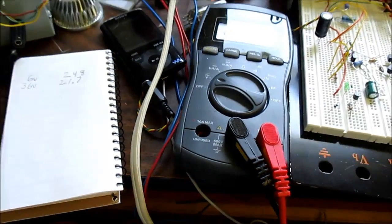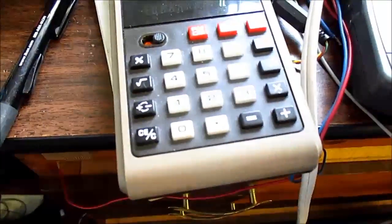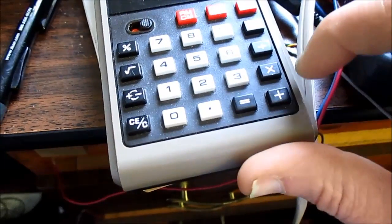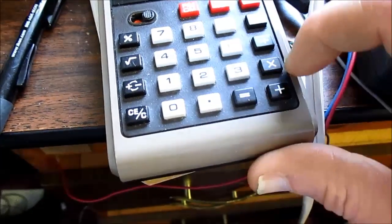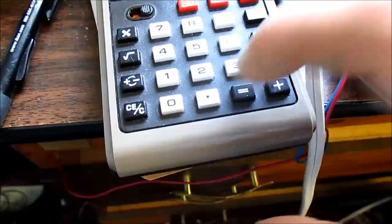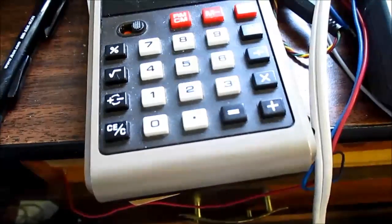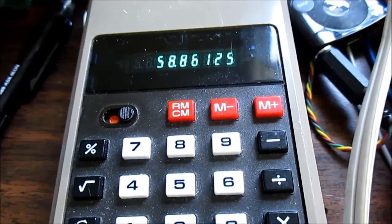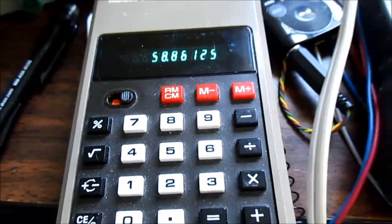So let's see what kind of power we are getting from that. So we have 21.7 volts RMS, square that, divided by 8 ohms, 58.86 watts. Getting pretty close to 60.